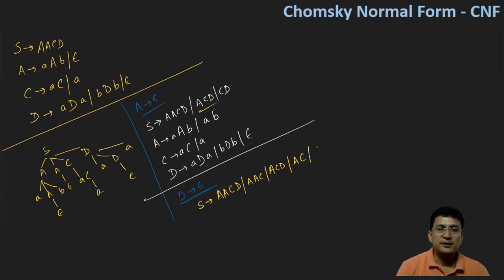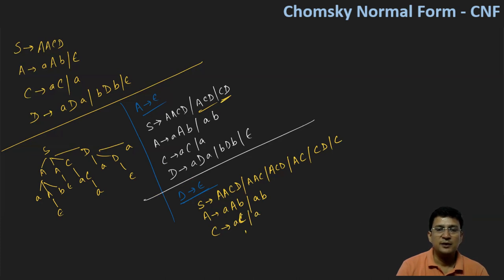This will become AACD. Then it will become ACD. Then AC. So A produces small a, capital A, B — there will be no change in this. Small a, B — there will be no change in this. Then C produces AC. And then D productions change: D produces aDA, then double A, then BDB, and if D is epsilon, this will become BB.